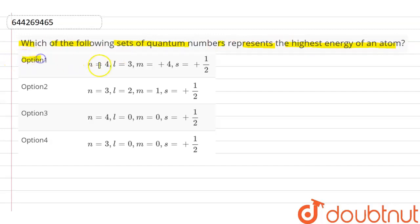Option first: n will be 4, l will be 3, m will be plus 4, s will be plus half. Option second: n will be 3, l will be 2, m will be 1, s will be half.